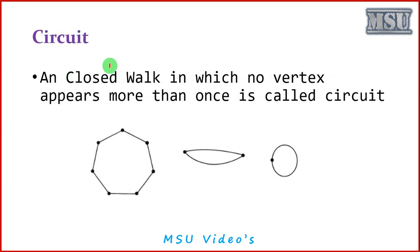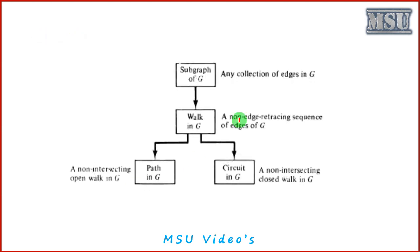A circuit is a closed walk in which no vertices are allowed to appear more than once. To summarize: if there is no restriction, it is a walk. With restrictions, we define a path and a circuit — path is an open walk, circuit is a closed walk. In a circuit, no vertices may repeat. Every path is a walk and every walk is a subgraph, but not every subgraph is a walk and not every walk is a path. Similarly, every circuit is a walk, but not every walk is a circuit.